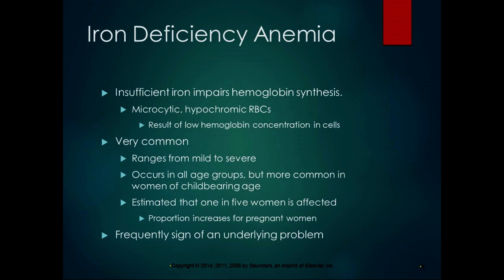Iron deficiency anemia involves insufficient iron, which impairs hemoglobin synthesis. We need that iron molecule to make the heme part of hemoglobin. Insufficient iron results in microcytic — small — and hypochromic — less color — erythrocytes: tiny pale red blood cells. This results in low hemoglobin concentration in cells because you don't have the part where oxygen binds. Iron deficiency anemia is common, ranges from mild to severe, and occurs in all age groups.